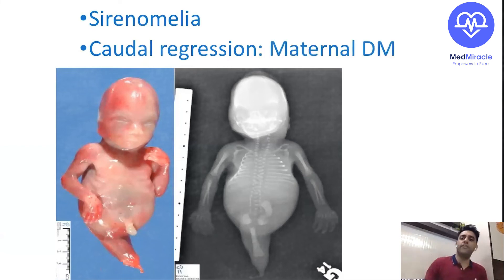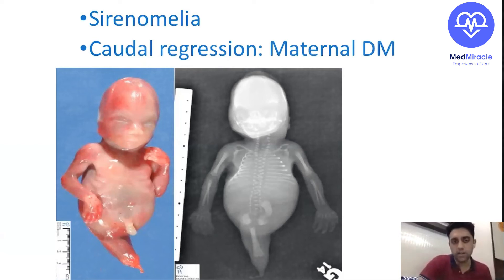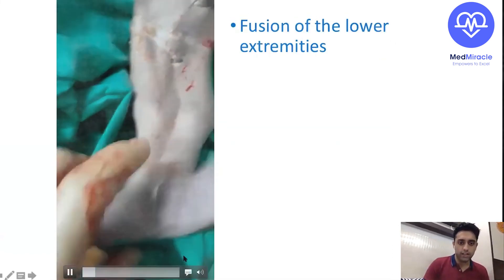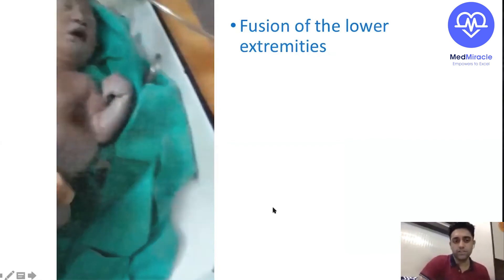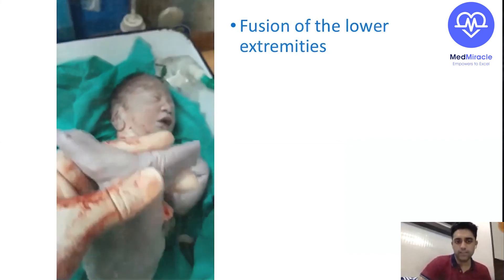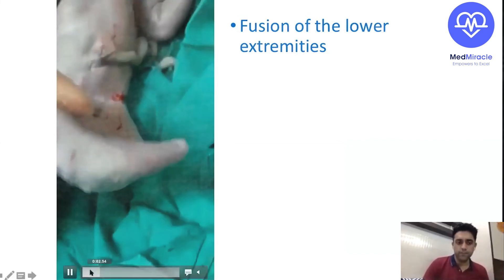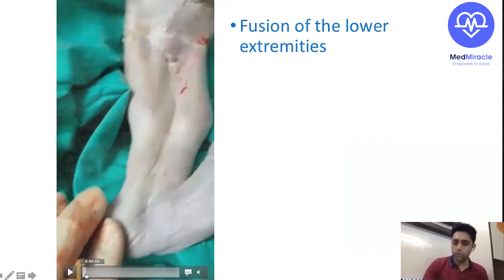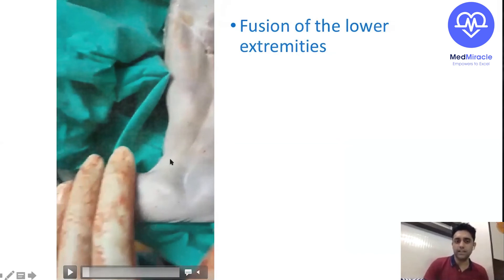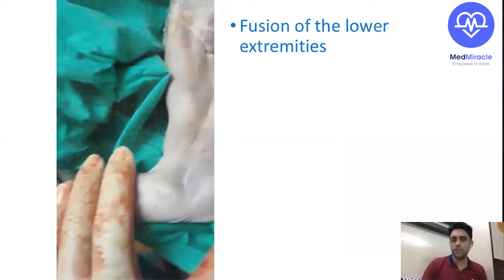The most specific condition in infant of a diabetic mother is caudal regression syndrome — this case is sirenomelia. I'll show you another picture: can you see the fusion of the lower limbs? This is a fusion of the lower extremities — same condition. This is known as mermaid syndrome, the fusion of the lower extremities. A recent AIIMS question.